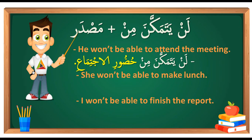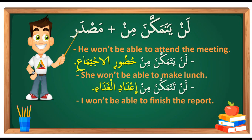'She won't be able to make lunch.' Because it's 'she,' we say لن تتمكن من, then make lunch: إعداد الغداء. الغداء means 'lunch.' So the full sentence is: لن تتمكن من إعداد الغداء.